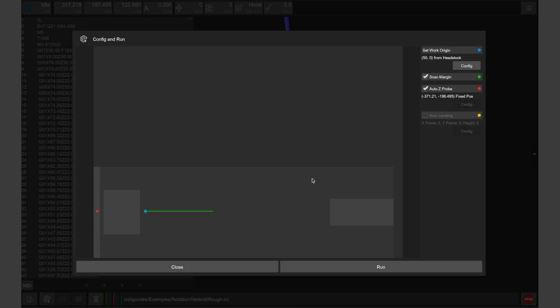We also want to enable scan margin, which will trace the length of our design along our stock, and we want to enable auto z-probe which will be set to a fixed position for the fourth axis module. Auto leveling is not used for fourth axis designs. Once configured, click run.